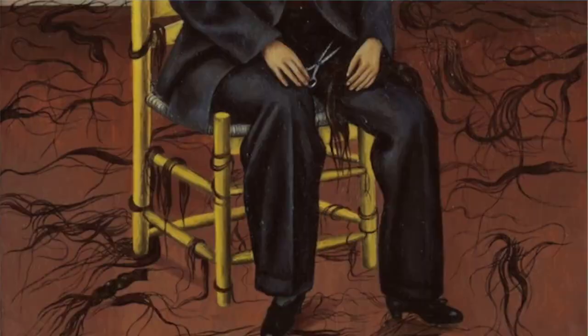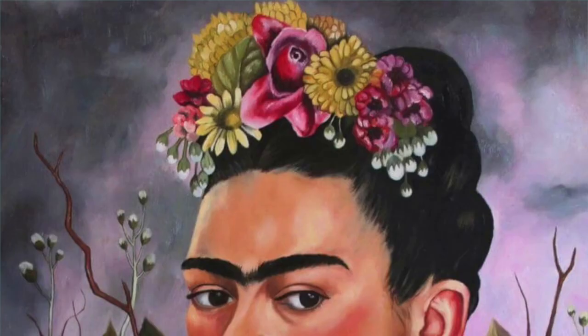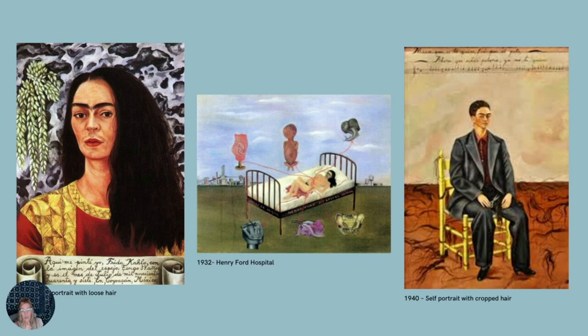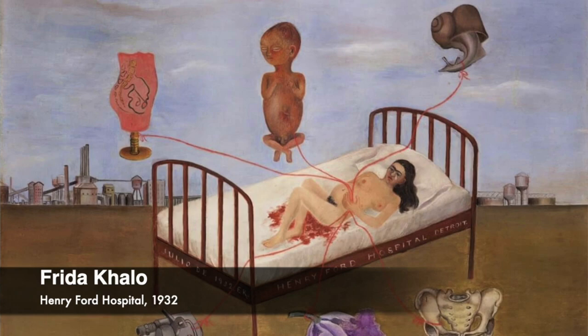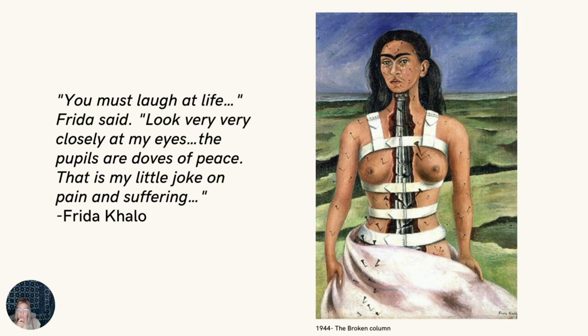Frida Kahlo was also an early artist to incorporate text into her work, and this text allowed the viewer insight into the concept behind the work. But many of her pieces relied on symbolism—images that connect to an idea, feeling, or emotion—such as the center image, Henry Ford Hospital, which depicts the painful experience of miscarriage that Frida Kahlo went through.